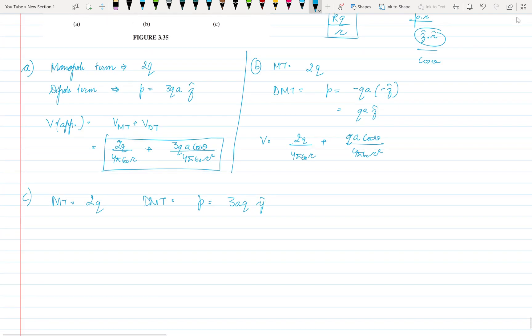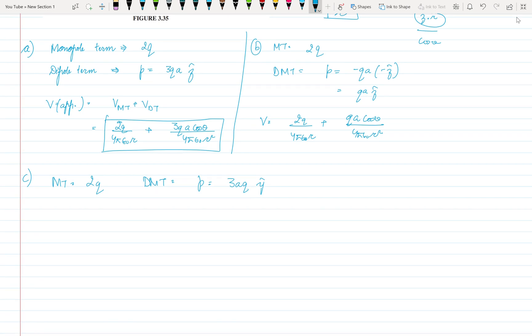Now the trick here, or the thing that we should look at: when we write the potential, that is net potential or the approximate potential I should say, it will be given by V monopole term plus V dipole momentum.